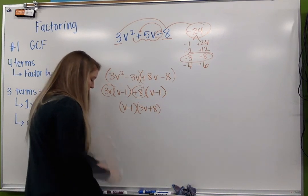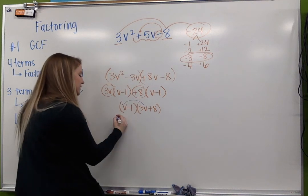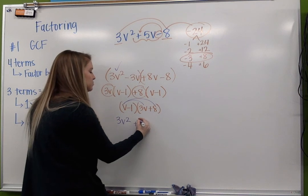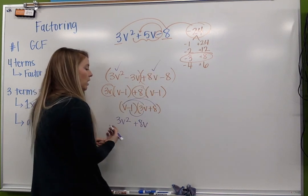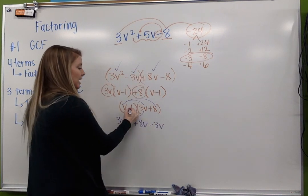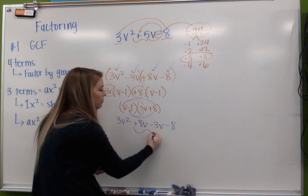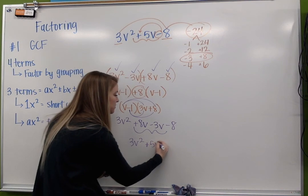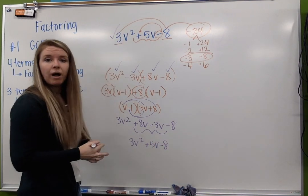Just to show that that works, we'll go ahead and foil that back out. 3v times v is 3v² - check. v times 8 is positive 8v - check. Negative 1 times 3v is negative 3v - check. And negative 1 times 8 is negative 8. If we combine like terms, I get 3v² + 5v - 8, which is my original polynomial.